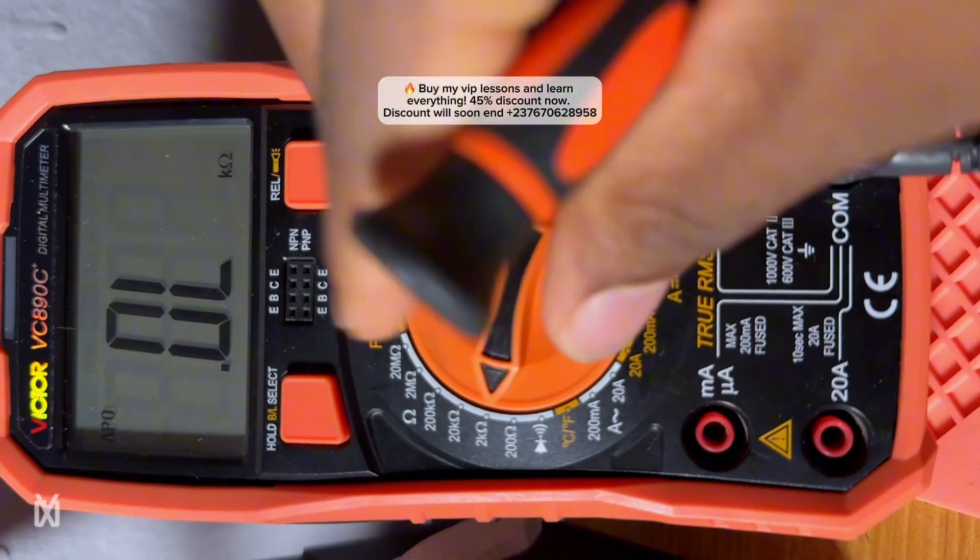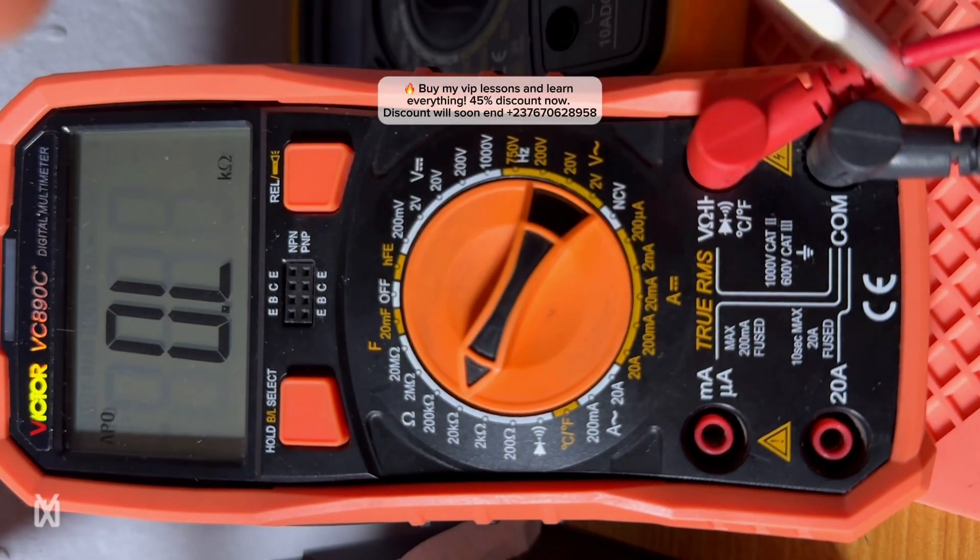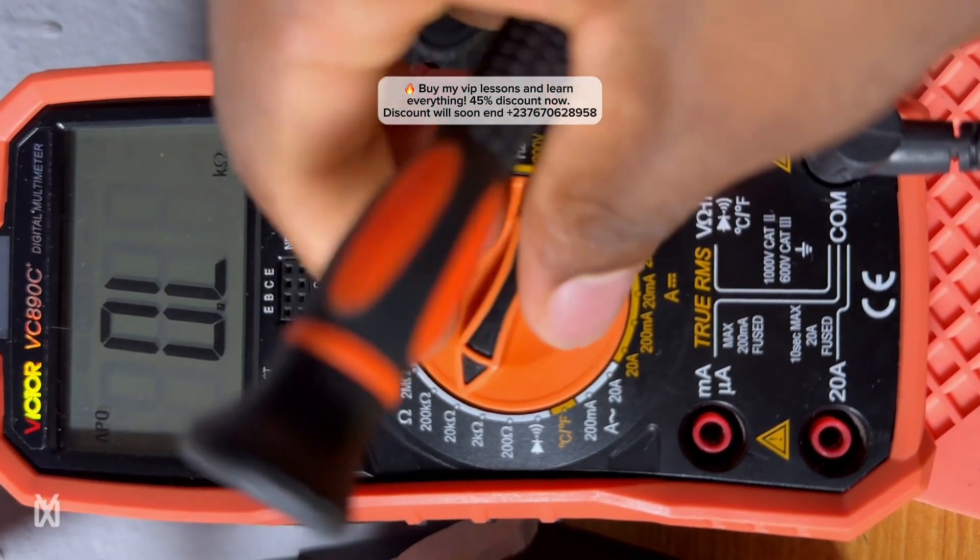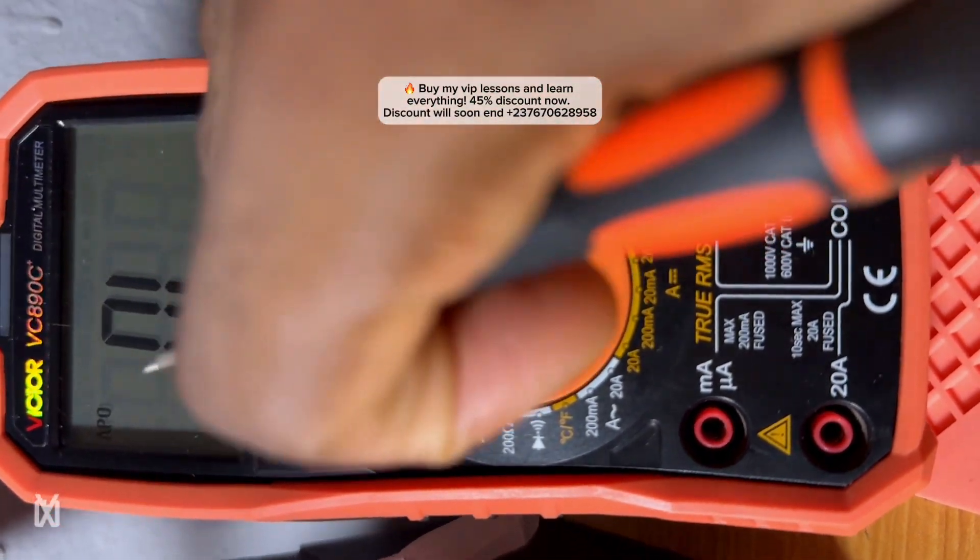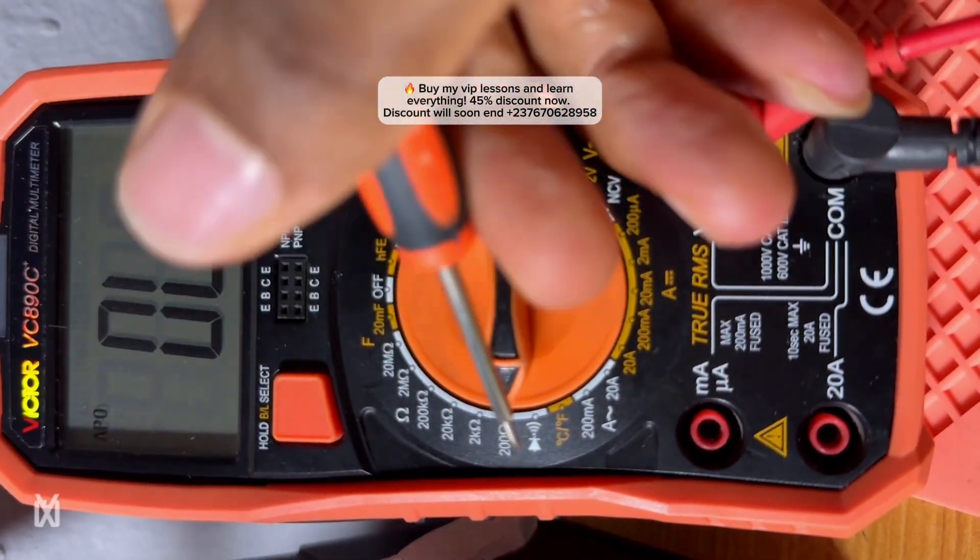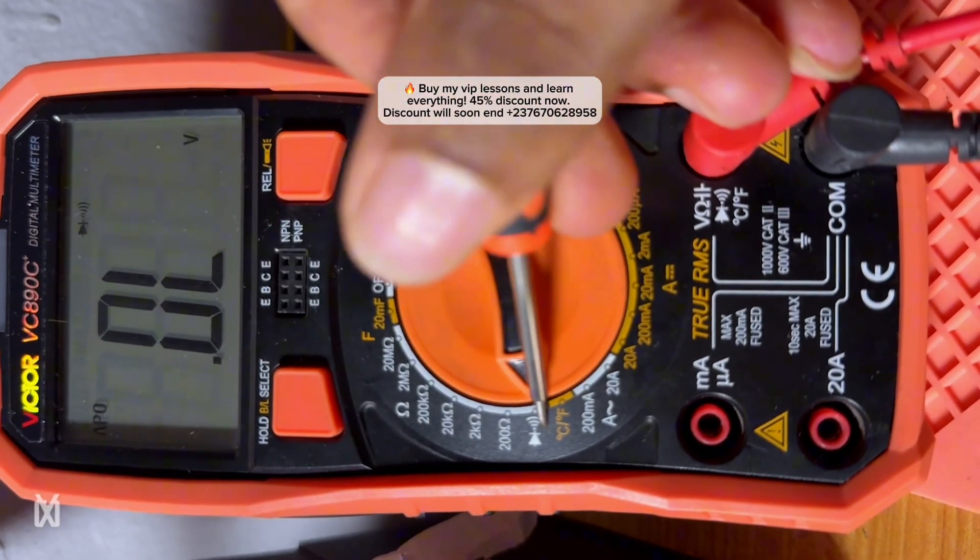So if you see that it's above 2000 kilo ohm, you set your multimeter right here to be able to test and it will give a reading. Because if it's 20 kilo ohm, you set it right here it won't read. You set it here, it's not also going to read.